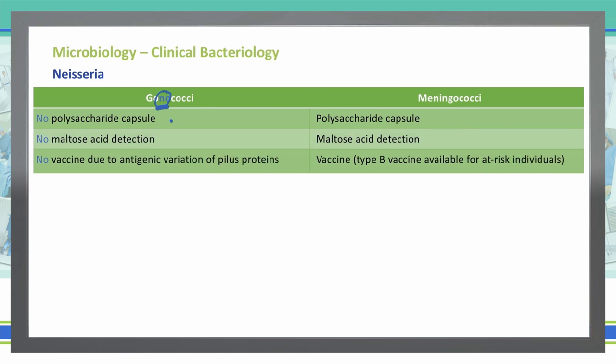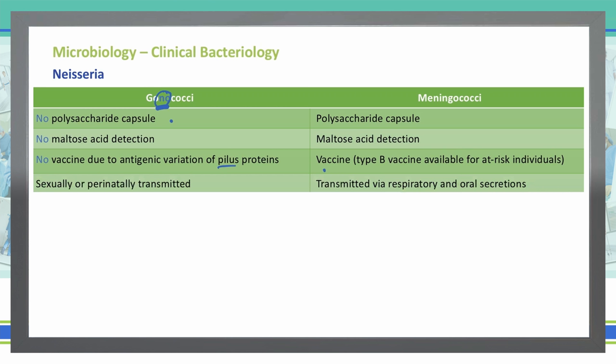There is NO vaccine available for gonococcal — that's due to the variation in the pilus proteins, which help in the motility of this bacteria. Whereas in contrast, meningococcal does have a vaccine. Gonorrhea is sexually or perinatally transmitted, and meningococcal is more transmitted via respiratory or oral secretions.